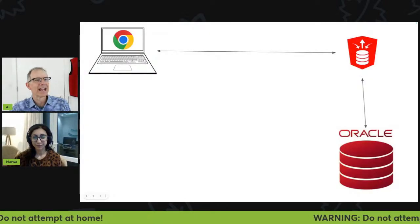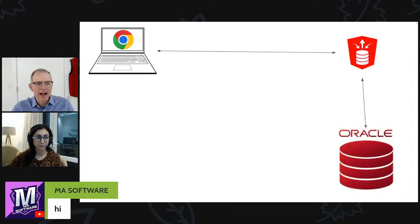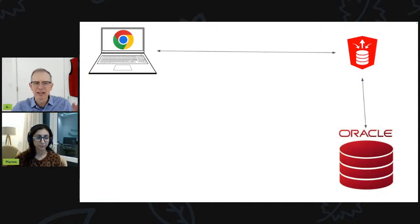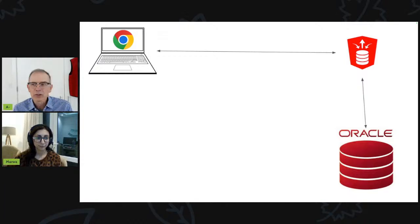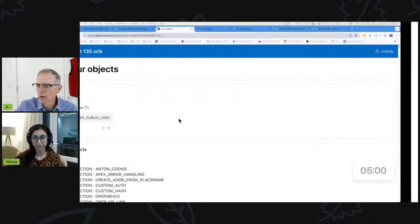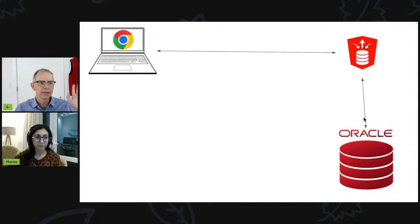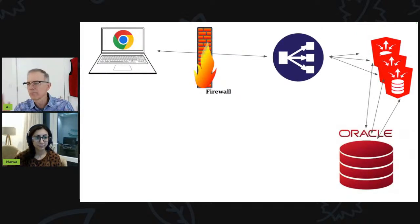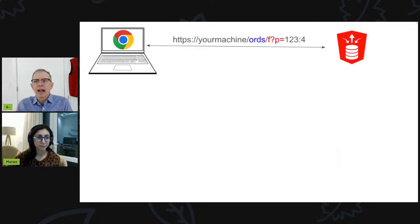Most people understand that your web browser talks to ORDS somehow, and ORDS talks to the database and the Apex engine, and everything goes back and forth. But it's actually pretty complicated. We're going to kick off our timer right now. It can be even more complicated — you can have firewalls, load balancing routers, multiple ORDS instances, multiple databases — but let's just talk about the simple scenario. Your browser makes a connection to ORDS and it's got something like this.